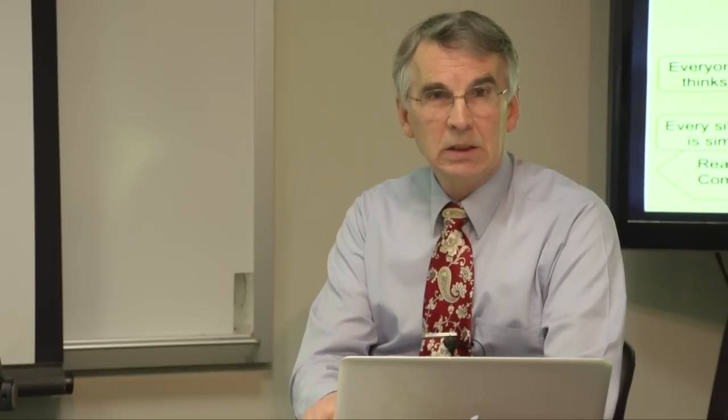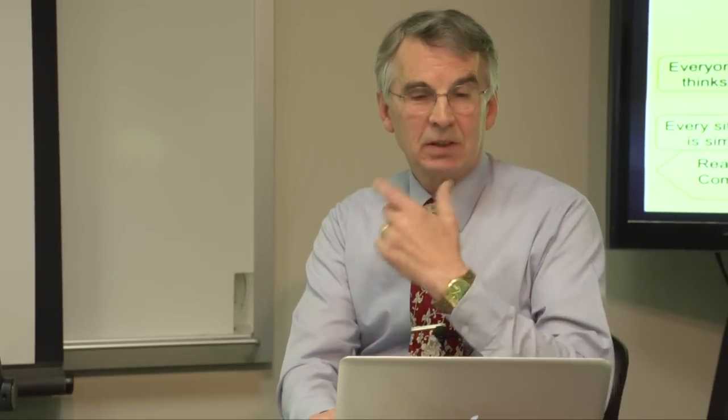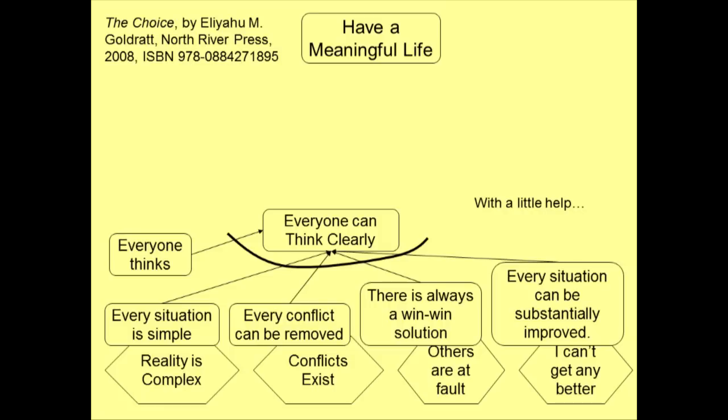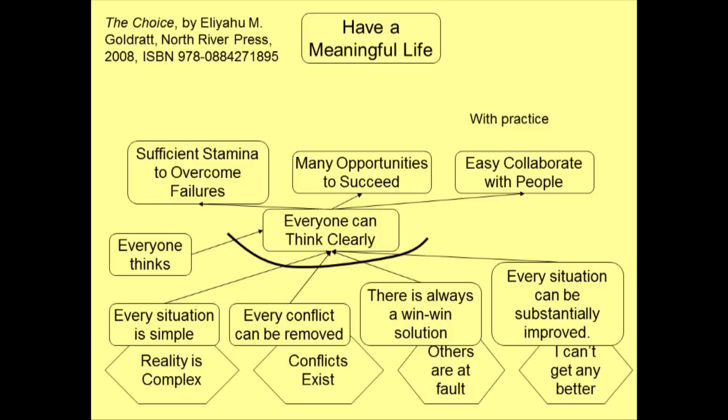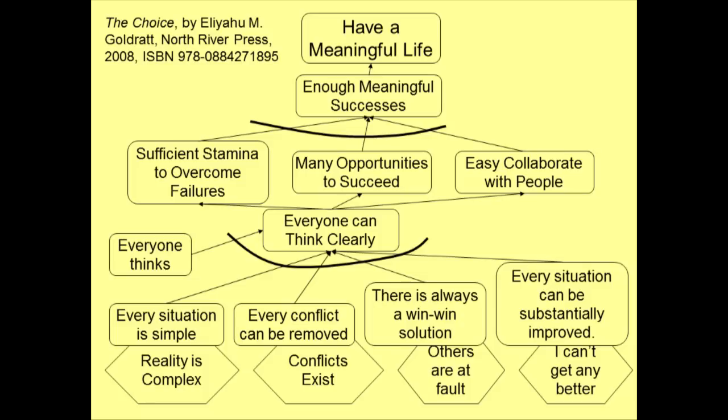If we can think, and everybody does, in fact it's sometimes hard because you go home and you say, I don't want to think anymore, turn on the television, let somebody else think for me. So everybody thinks. So the basic elements of the theory of constraints say that we should be able to think clearly if we can remove these obstacles from our minds. And with a little help, we can soon have the stamina to overcome failures, we can find many opportunities where we can succeed. Even though we have some failures, we'll have a lot of successes. And we'll find that it's pretty easy to collaborate with people if we understand that people are good and that we can resolve these conflicts and that it's not their fault. When these things happen and with some practice, we can have enough meaningful successes in our life to have a meaningful life.